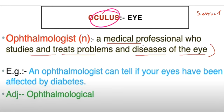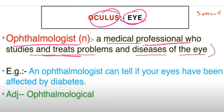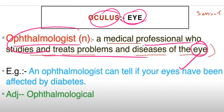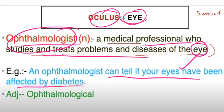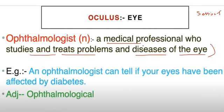We have seen the word 'oculus' — oculus means eye. An ophthalmologist can tell if your eye has been affected by diabetes. The adjective form is ophthalmological.